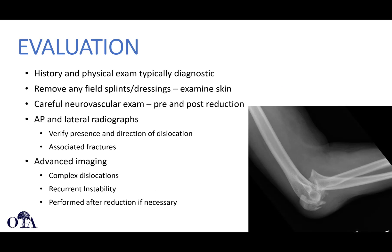History and physical exam are typically diagnostic. Remove any field splints or dressings, inspect the skin, and perform a careful neurovascular exam pre- and post-reduction. AP and lateral radiographs help identify dislocation, its direction, and any fractures. Advanced imaging such as CT scanning may be needed to better characterize fractures.